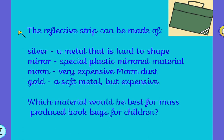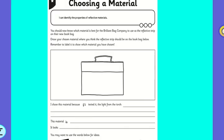The reflective strip — you can choose what it's made of. It could be made of silver, but that is a metal that is hard to shape. It could be made of special plastic mirrored material. It could be made of moon dust, because the moon — believe it or not — is a reflective surface. Or it could be gold, a soft metal but expensive. We need to mass produce this book bag, so which is best? As lovely as it would be to get moon dust, I think special mirrored plastic would probably be the best choice.